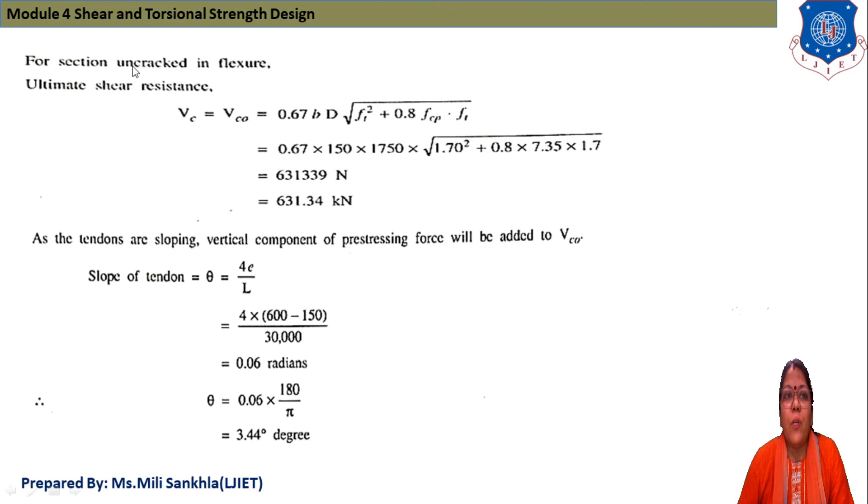For section uncracked, clause number given in our IS-1343-2012, we use the equation VC is equal to VCO 0.67 BD under root of FT square plus 0.8 FCP into FT. This is the ultimate shear resistance. VC is our ultimate shear resistance. 0.67 B is equal to 150, D is equal to overall depth of section 1750, FT we find out under root 0.24 under root of FCK. Put the values and we get ultimate shear resistance that is 631.34 kN.